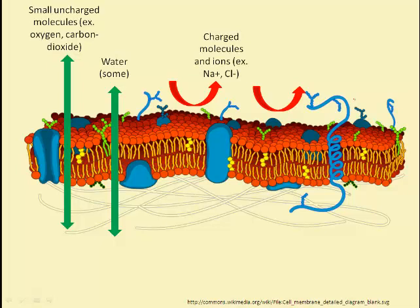Charged molecules and ions, however, cannot cross the phospholipid bilayer. These include sodium, chloride, and calcium ions — anything with a charge. Very large molecules like glucose also can't slip between the phospholipids.